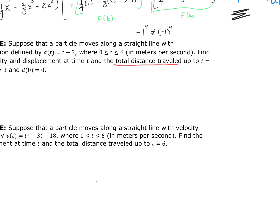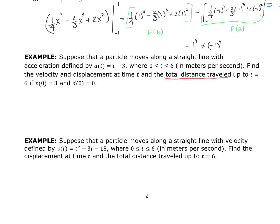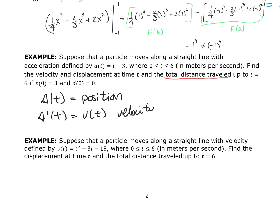Just as a refresher: if s(t) is your position, the first derivative gives velocity, and the second derivative of position — which is the first derivative of velocity — gives acceleration. They're giving us the acceleration, so I'll have to work backwards and integrate to find the anti-derivative. I'll start with acceleration a(t) dt, which gives me velocity. Integrating t minus 3 dt gives t squared over 2 minus 3t plus C.